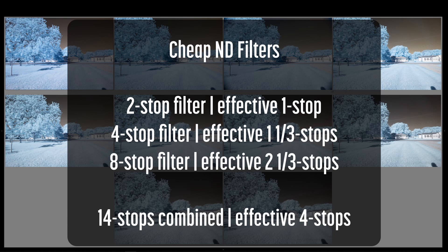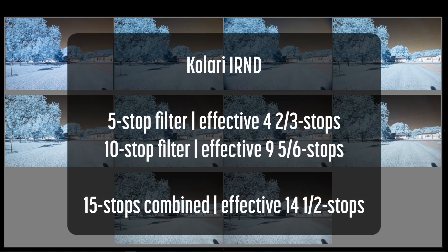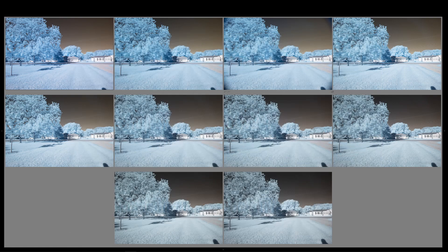The Kalari IRND 5-stop filter produced an effective 4⅔ stops. The Kalari IRND 10-stop filter produced an effective 9⅚ stops. When combined for 15 stops, they produced 14.5 stops of light blocking. The Kalari IRND filters accurately stopped the number of stops claimed, and my results are very close to the advertised ratings. The minor differences could have been from filters, changing light conditions, or my testing method.